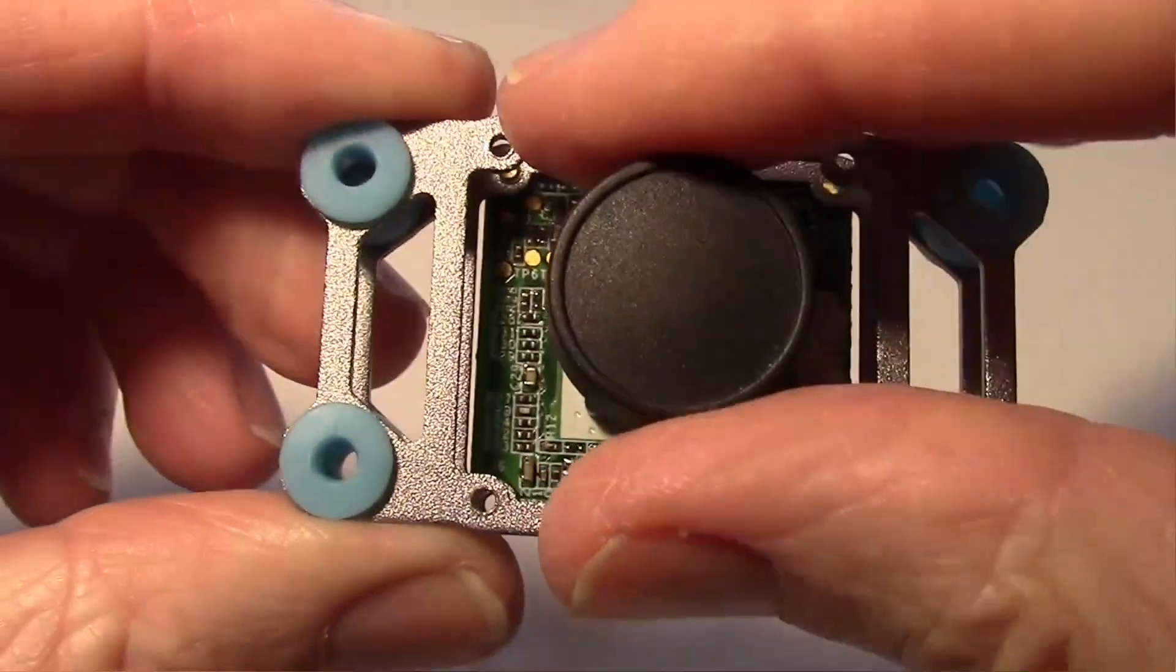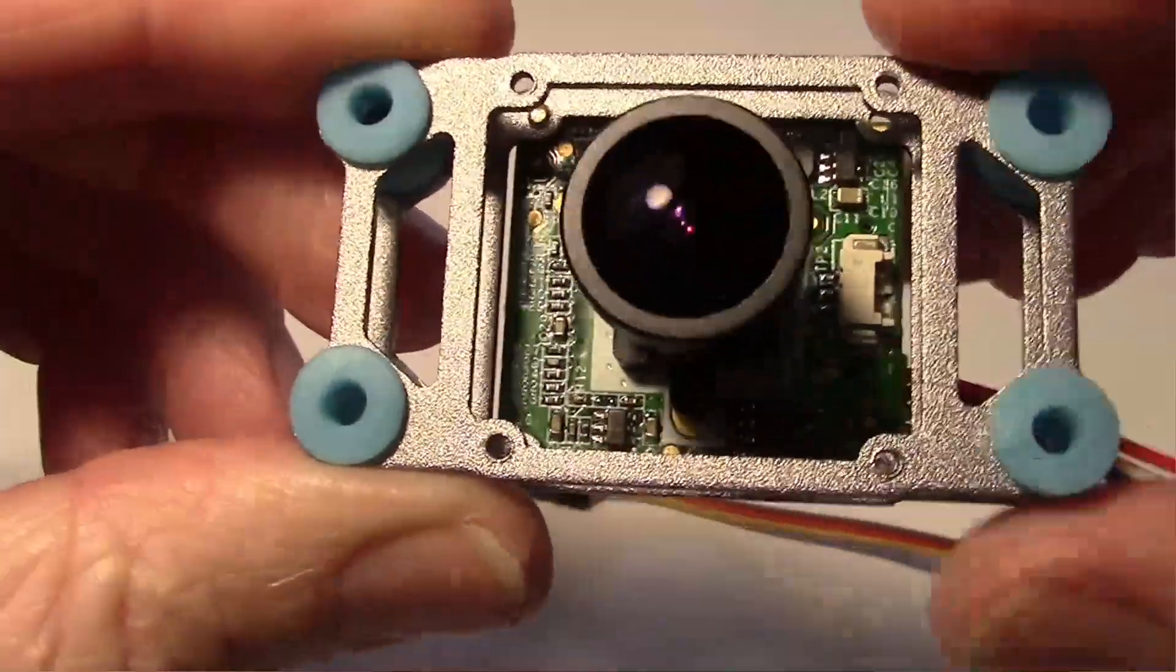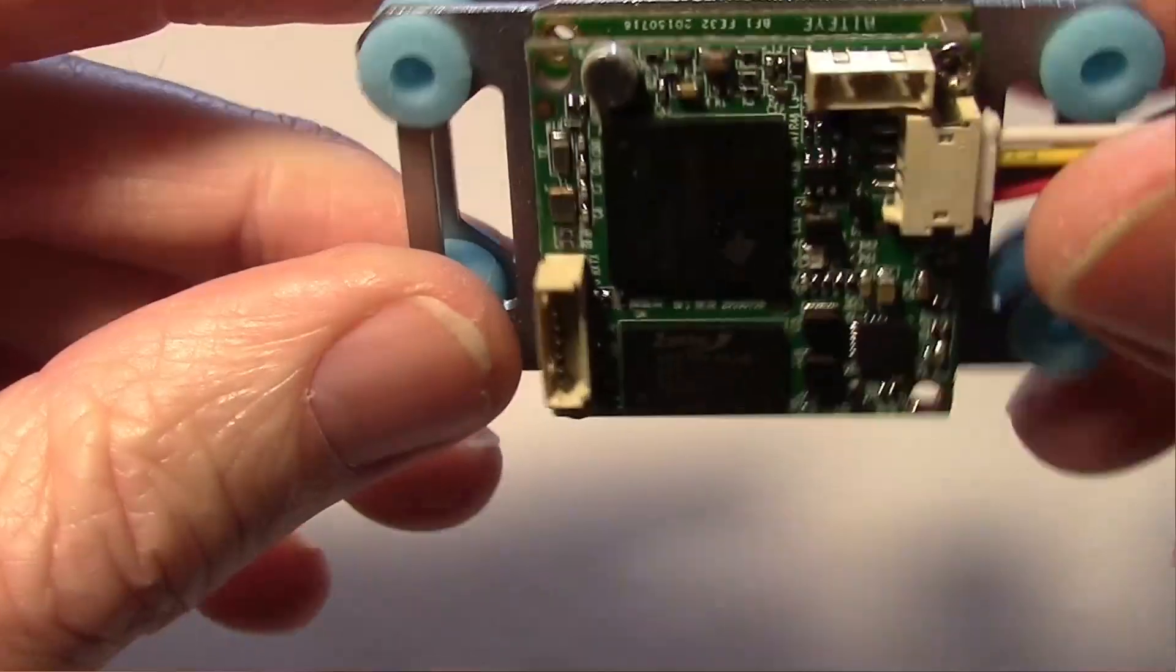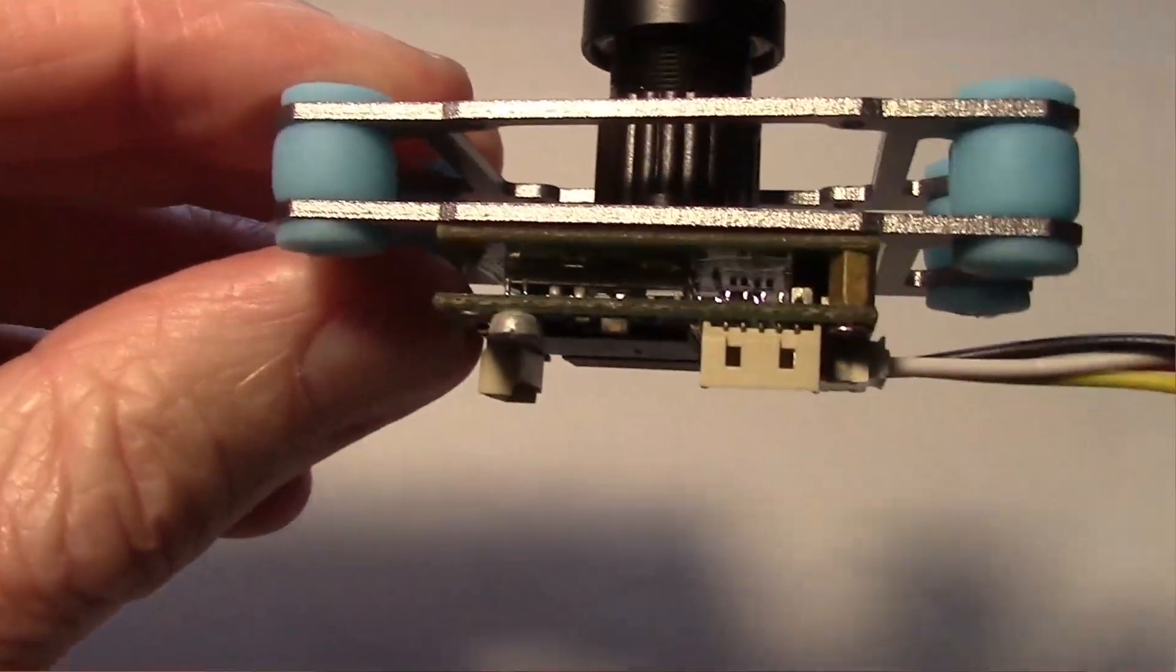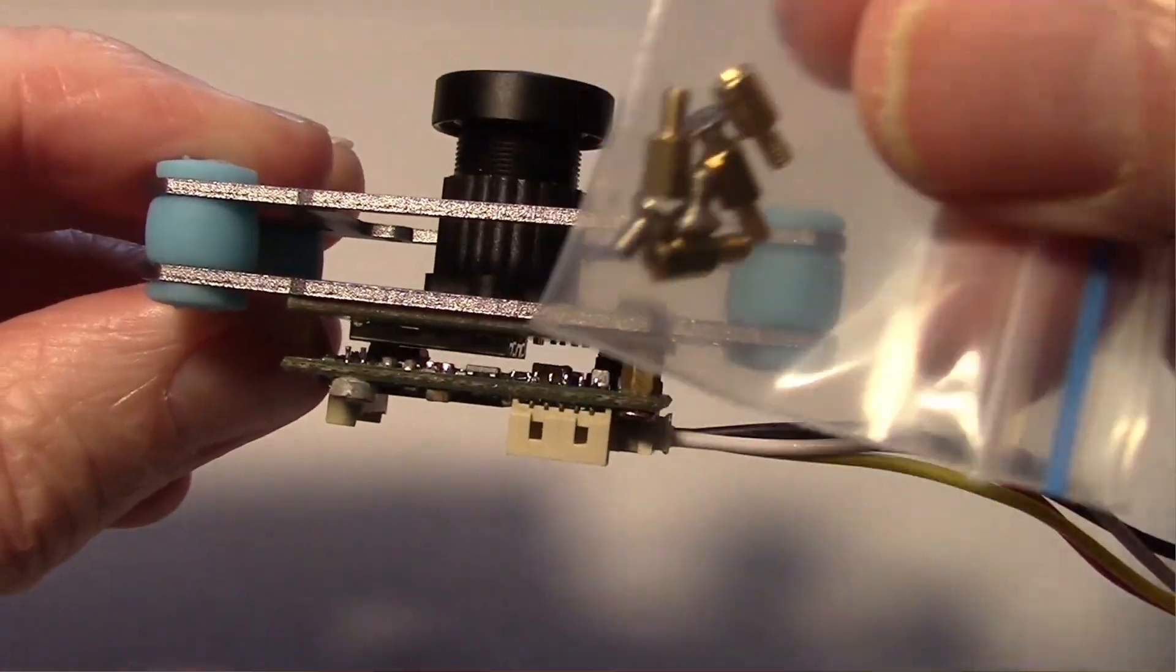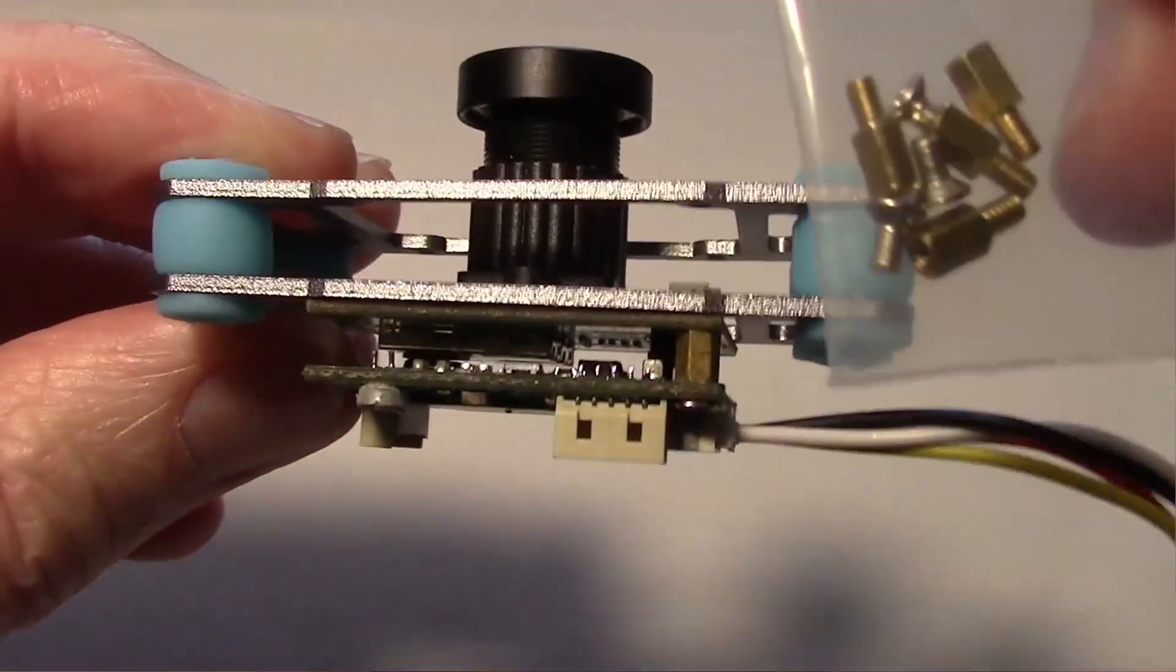So here's the camera itself. It comes with a lens cap, is mounted on a shock absorbing mount right there and it can be removed. They give you some extra little standoffs if you want to mount it on your aircraft.